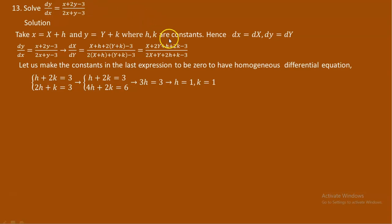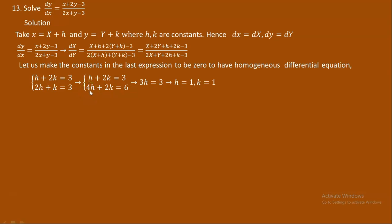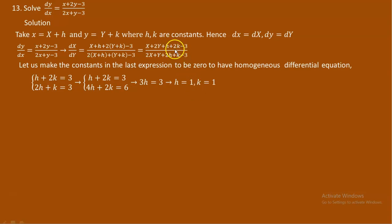To solve this simultaneously, multiply the second equation by 2, giving 4h plus 2k equals 6. Subtracting the first from this eliminates k: 3h equals 3, so h equals 1. Substituting h equals 1 into the first equation gives k equals 1. So h equals 1 and k equals 1, and with these values, the constants go to zero and the non-homogeneous equation becomes homogeneous.